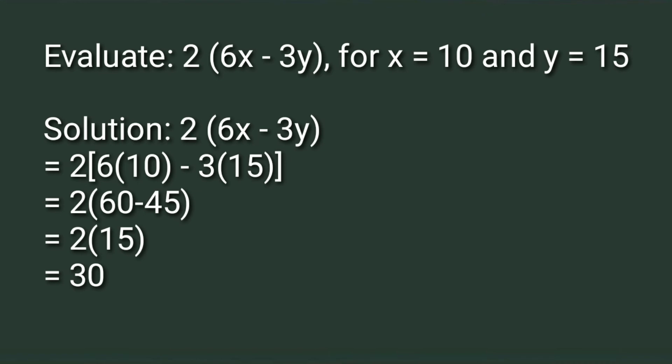Evaluate 2(6x minus 3y) for x equals 10 and y equals 15. Solution: 2(6x minus 3y) equals 2[6(10) minus 3(15)] equals 2(60 minus 45) equals 2(15) equals 30.